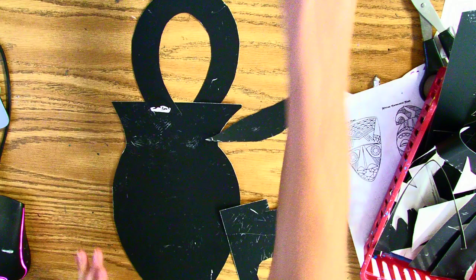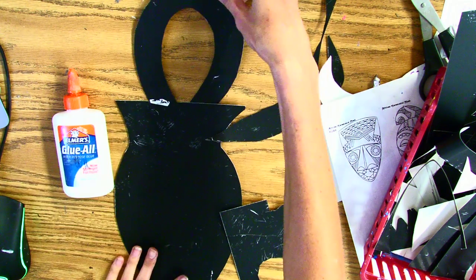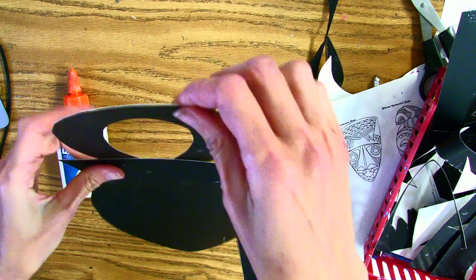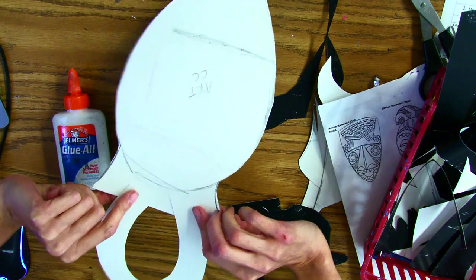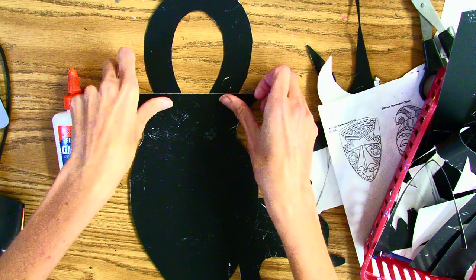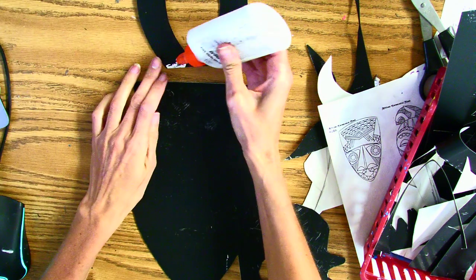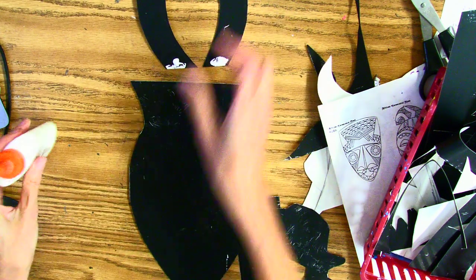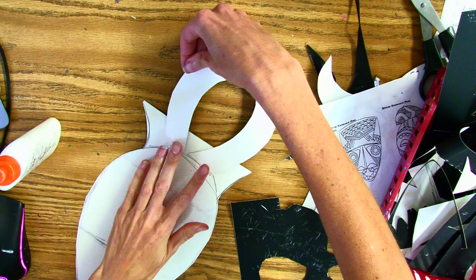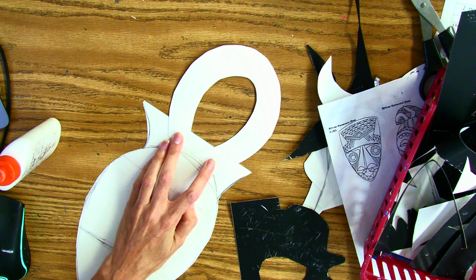But you have to use the Elmer's glue. The other stuff is not going to stick. And you want to make sure that the black side is facing the front, have a little overlapping. Just do a dot dot, not a lot. Be careful not to scratch the black part. Hold it down for a little bit.